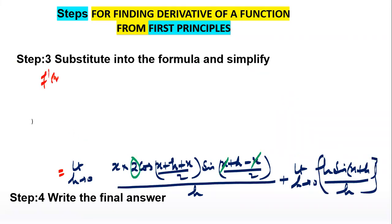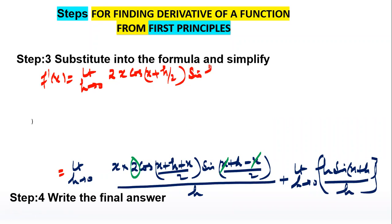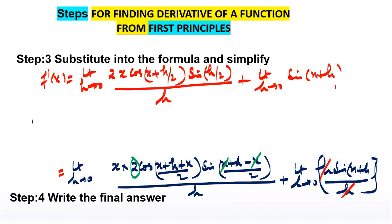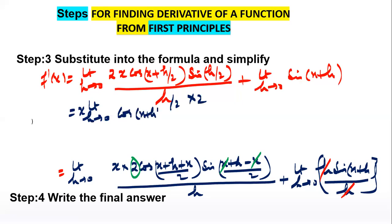After applying the identity, we get: f'(x) = lim(h→0) 2x·cos(x + h/2)·sin(h/2) / h, plus lim(h→0) sin(x+h). We rewrite the first term by dividing and multiplying by 2, giving x·cos(x + h/2)·[sin(h/2)/(h/2)] · (1/2) · 2.